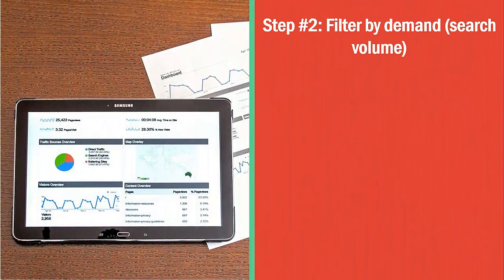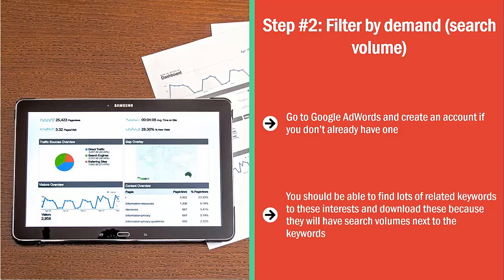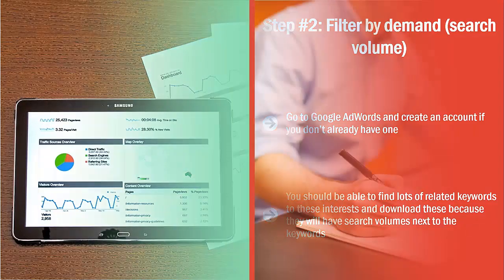Step 2: Filter by Demand Search Volume. Go to Google AdWords and create an account if you don't already have one. Once you're logged in, click Tools and use Google's Keyword Planner tool. Enter keywords related to the personal interests you listed in Step 1. You should be able to find lots of related keywords and download these, as they won't have search volumes next to them. At this point, delete from your list niches that have too little search volume or too much — you want something in the middle.